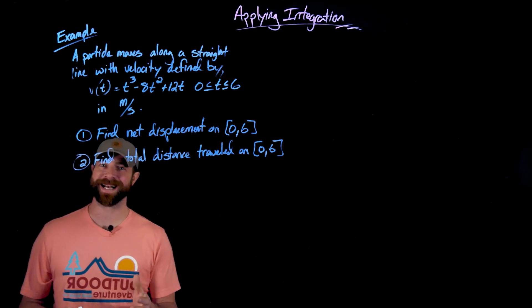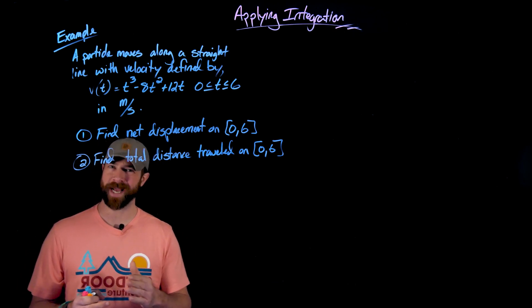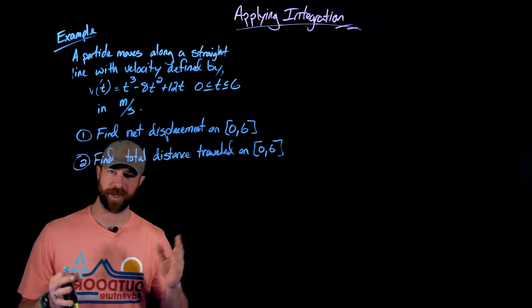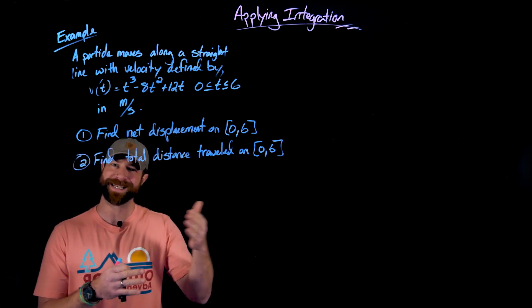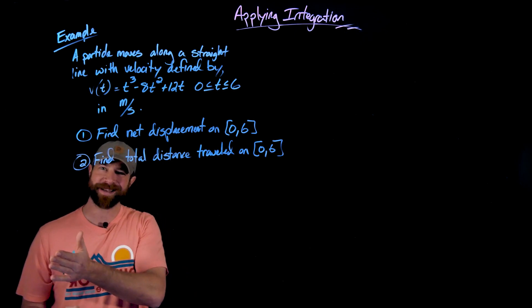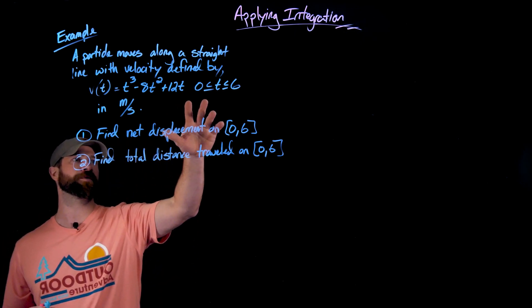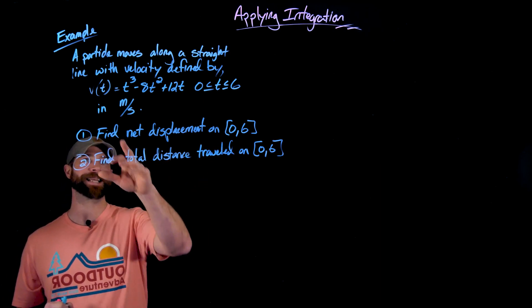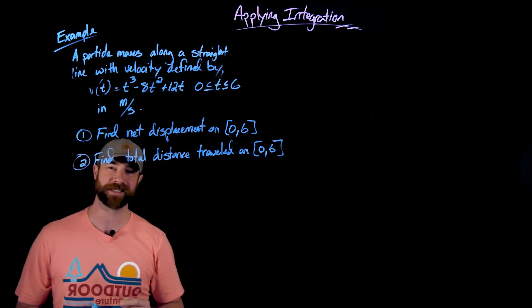All right, in this example, we have this classic context. We have a particle that's moving along a straight line, left and right. We'll say it doesn't matter if it's up and down, left and right, or at any angle. But we're gonna say positive values of this velocity is moving to the right and negative values of velocity is moving to the left. In this case, on the interval from zero to six, this is in seconds, meters per second is the output. We're asked to find the net displacement and the total distance.